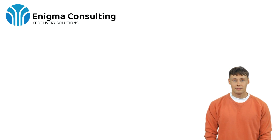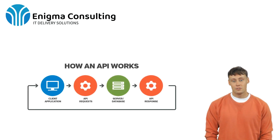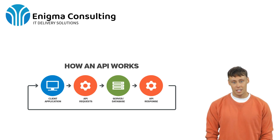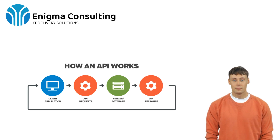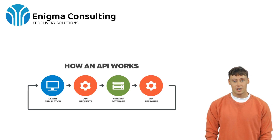An API is a set of rules and protocols that allow different software entities to communicate with each other. Think of it as a menu in a restaurant: you select what you want, and the kitchen — the server in this example — prepares the dish and serves it to you, the client. Understanding APIs helps in fetching and sending data between different systems, making them interact and function together.